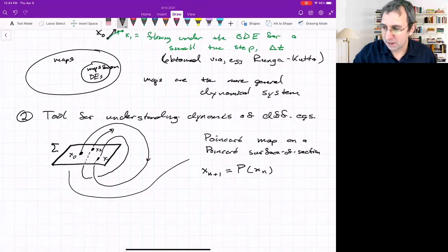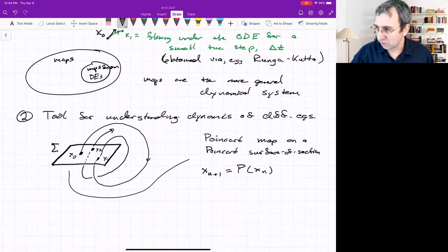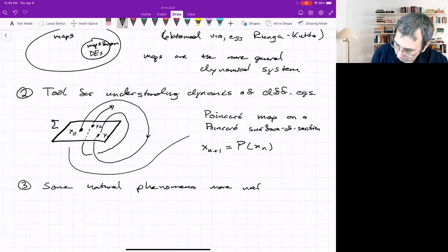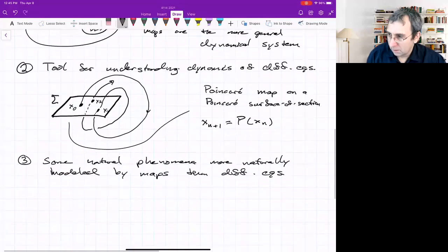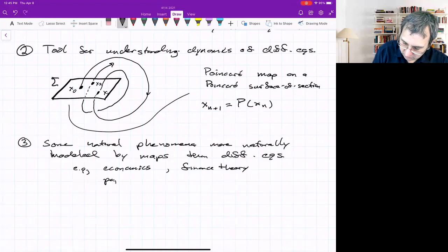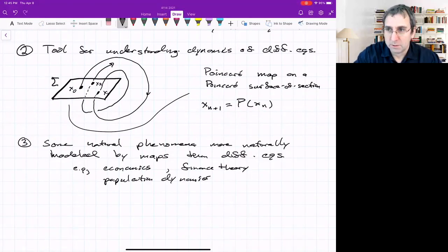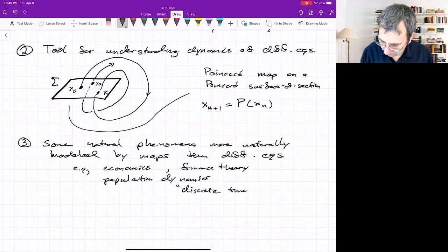But it comes from taking a slice of what's happening to trajectories in a three or more dimensional flow. There's also some phenomena that are just more naturally modeled via maps. So they're more naturally modeled by maps than differential equations. So for example, parts of economics and finance theory, population dynamics, and there's more things all the time that we find out might be better modeled in terms of a discrete model, kind of discrete time, rather than a continuous time.